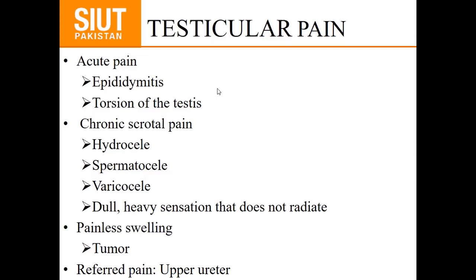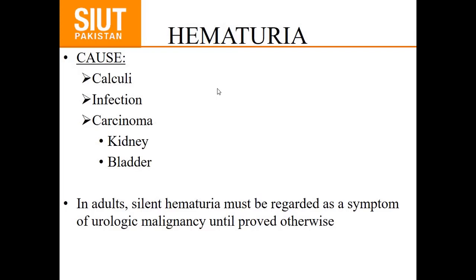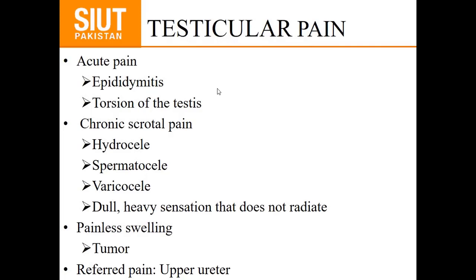One important thing we often forget in history, especially in a female patient presenting with pelvic pain — irrespective of whether it is renal or ureteric — the menstrual history in the female is very important. In every female patient presenting with pelvic pain or pain of the lower abdomen, we should ask the menstrual history. It is very important.